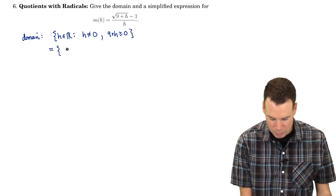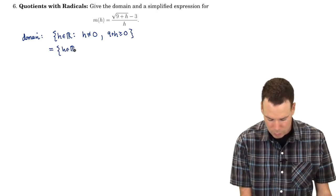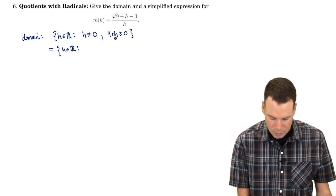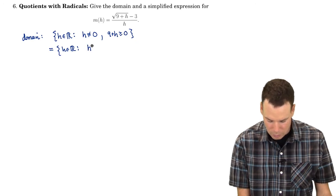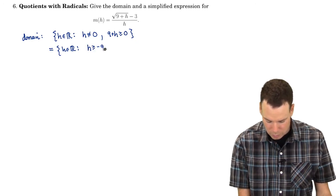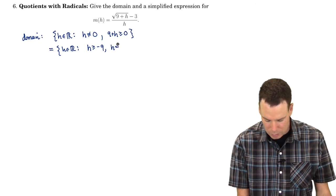So what that means is I need h to be a real number such that h has to be bigger than negative 9, bigger than or equal to negative 9, and h can't be zero.